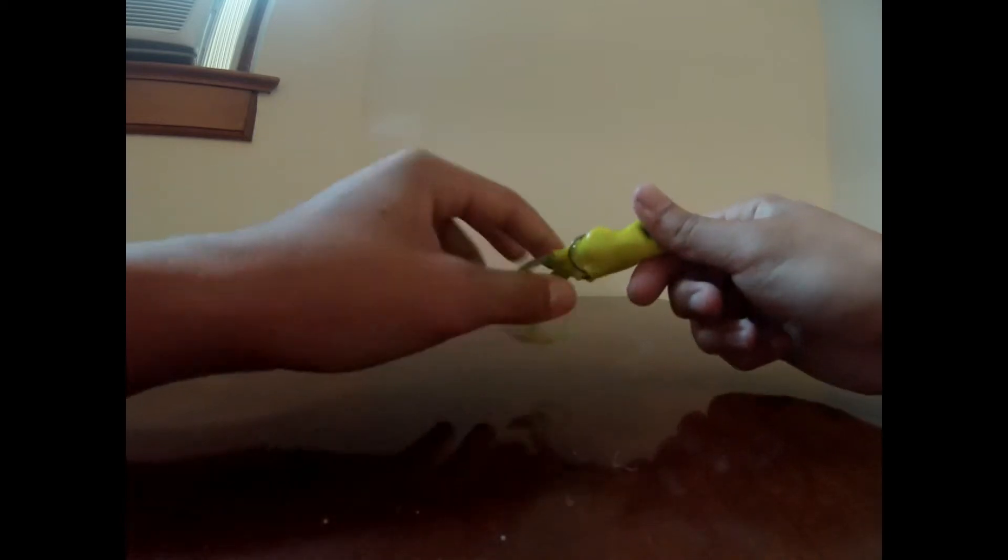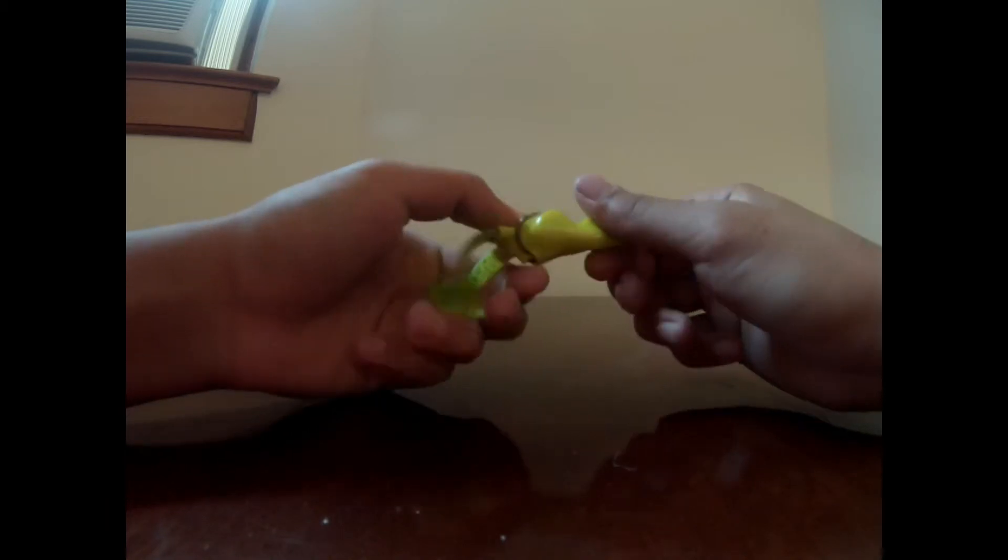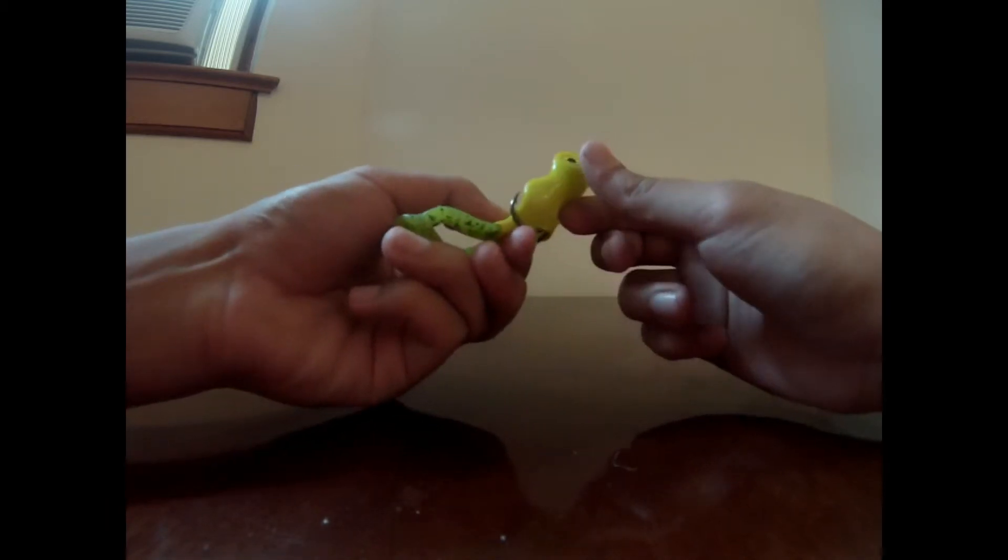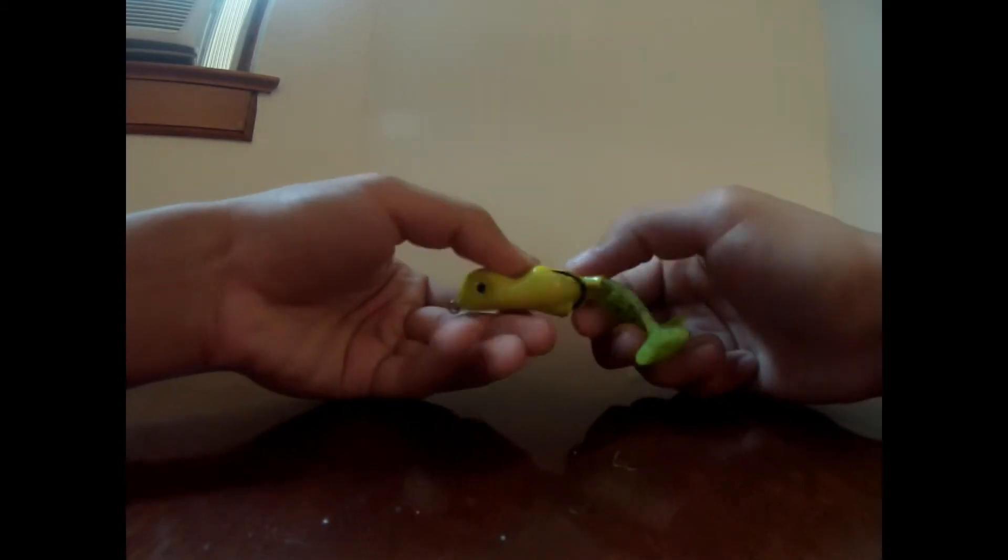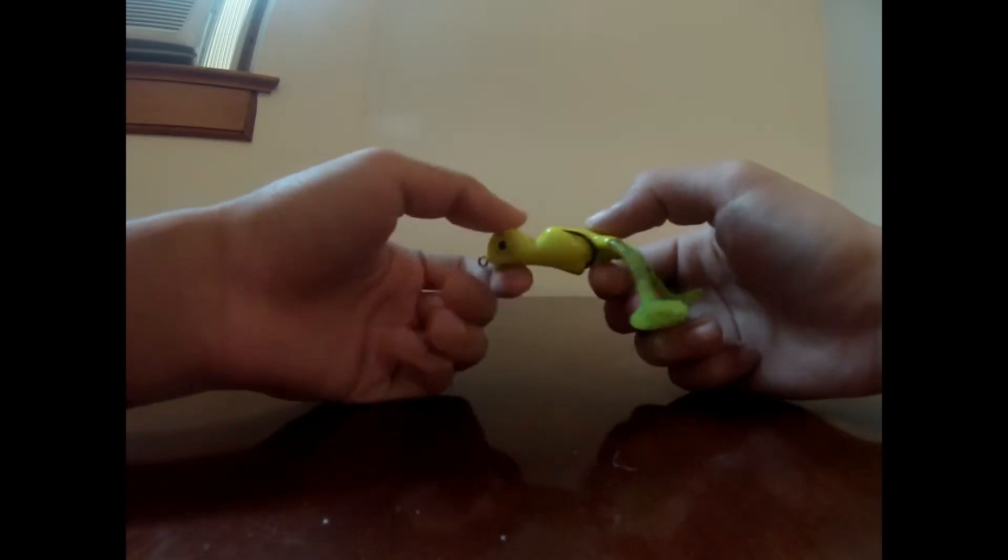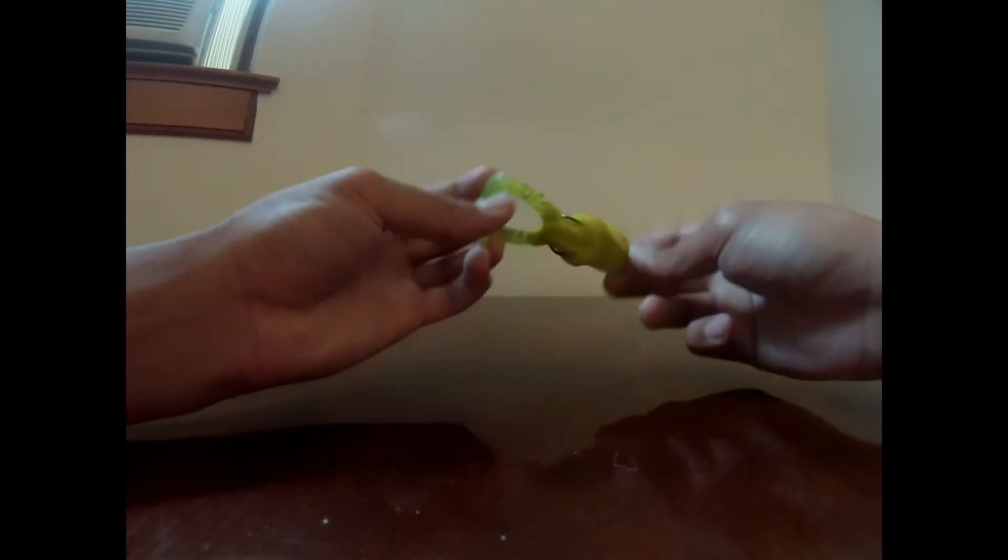They blow up on it all the time. But the hook set on it is kind of tricky so I recommend taking your pliers and bending back the hooks just a little bit. But not too much because then it's not weedless anymore. I've had so many fish with this and it's just an all around great bait.